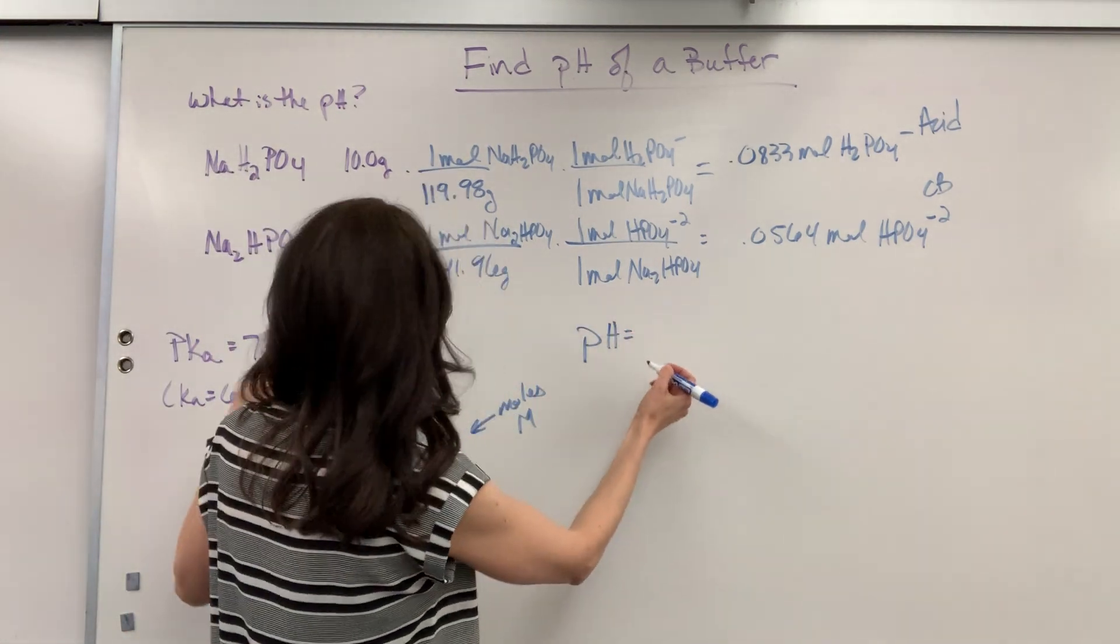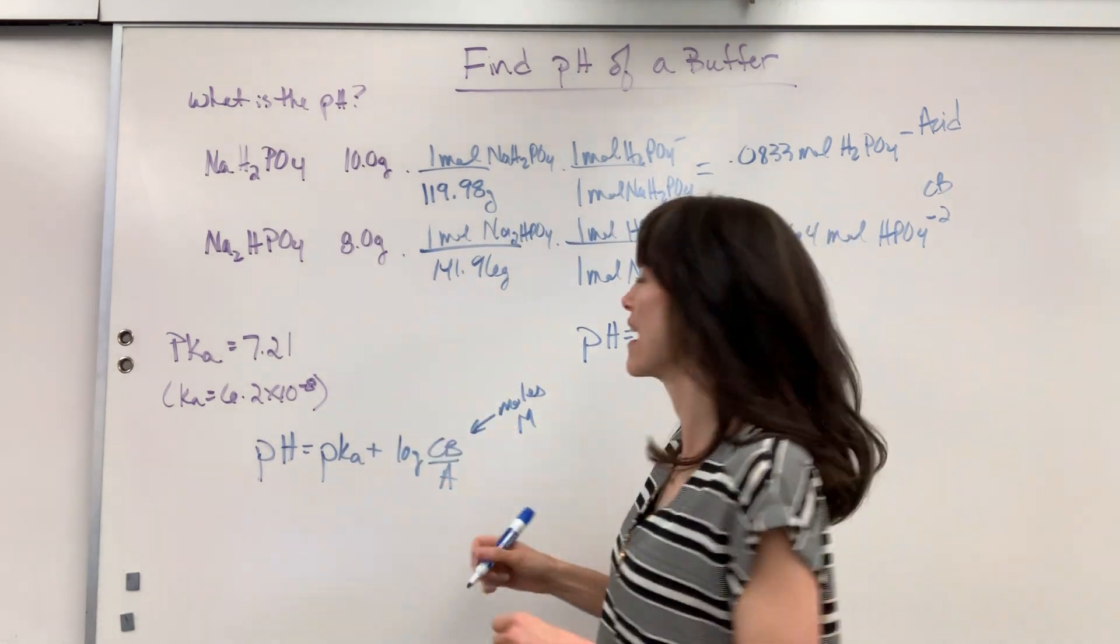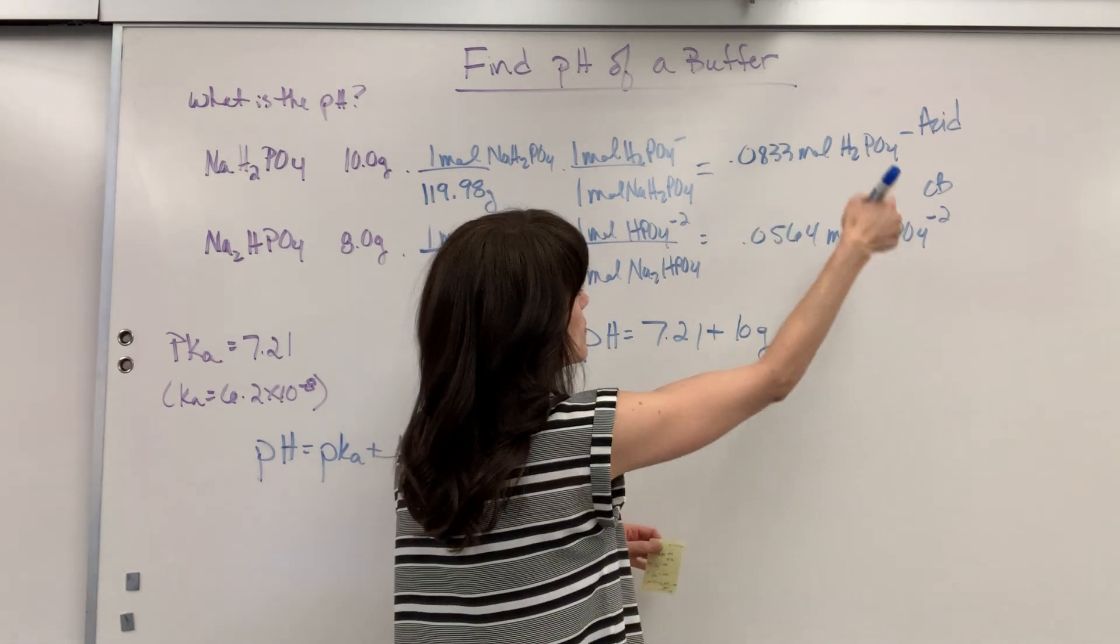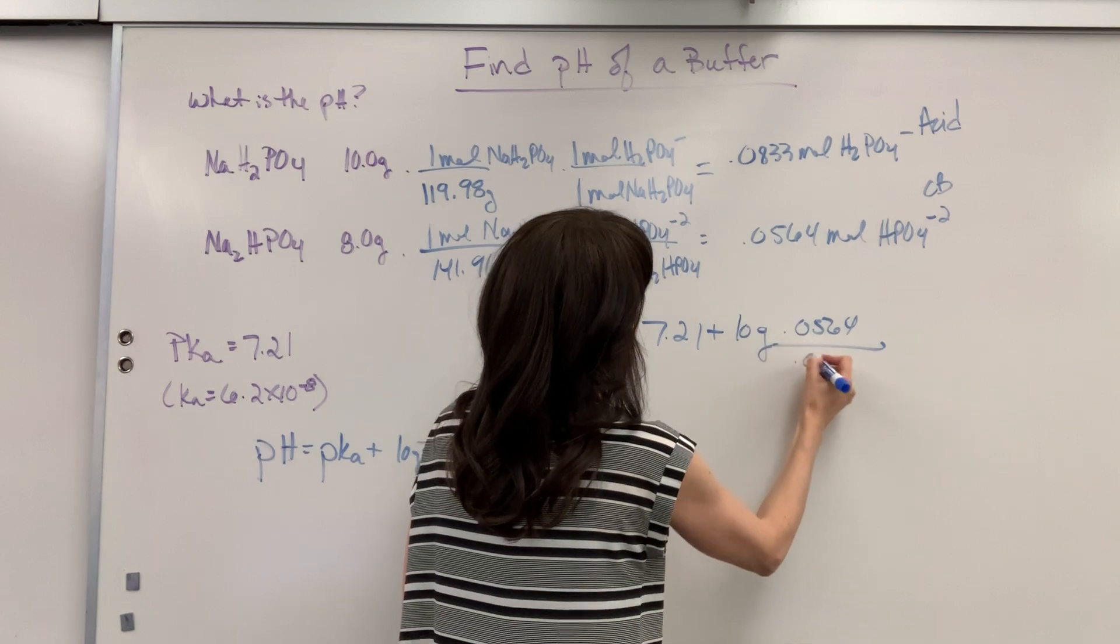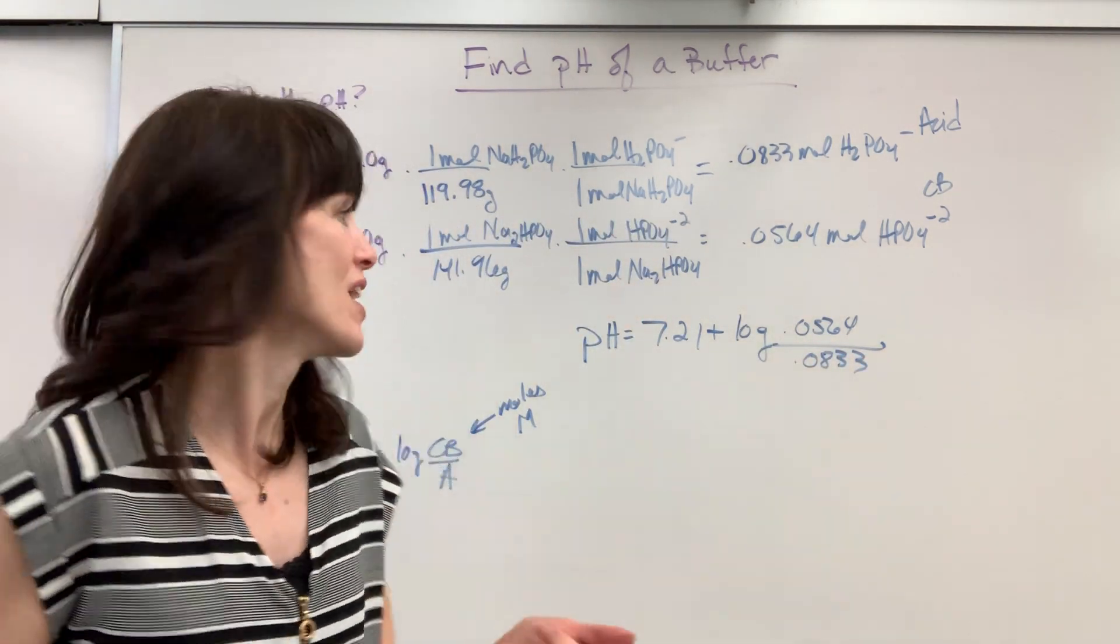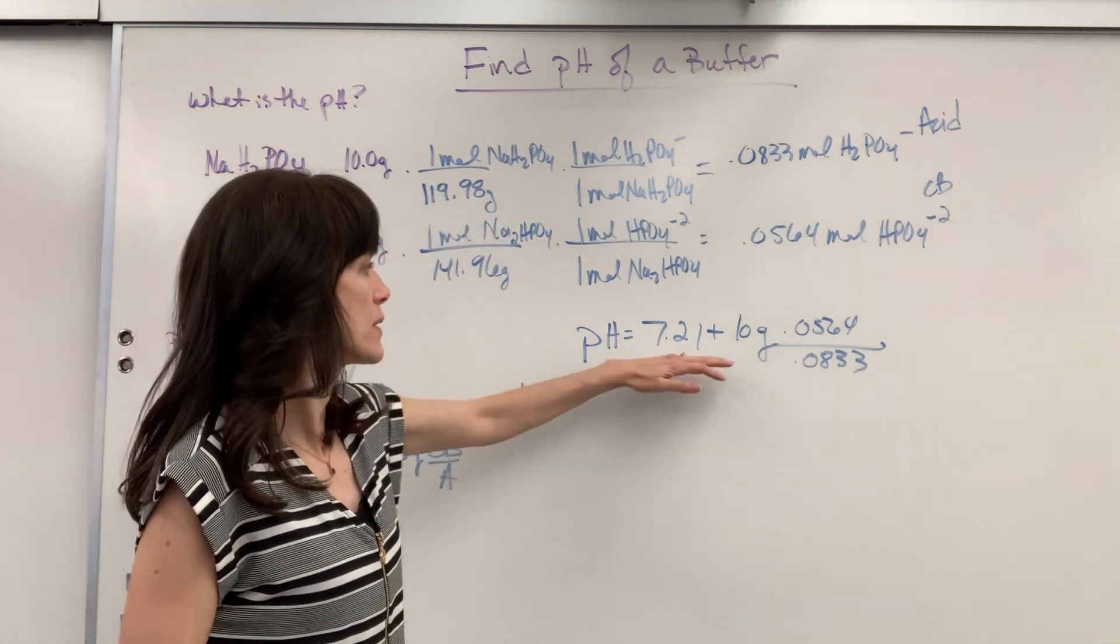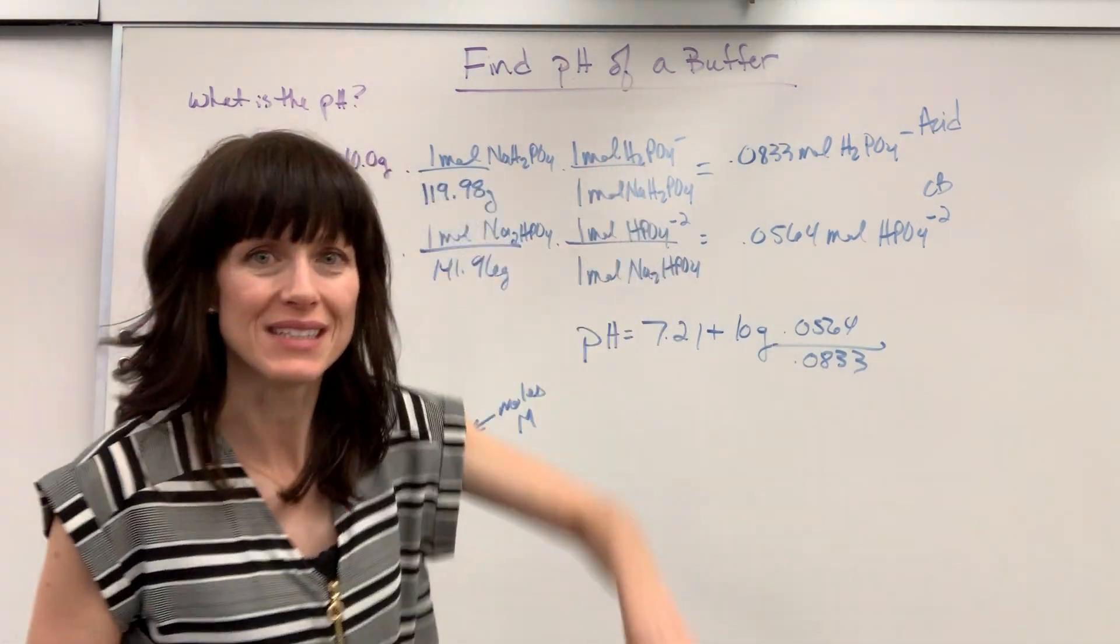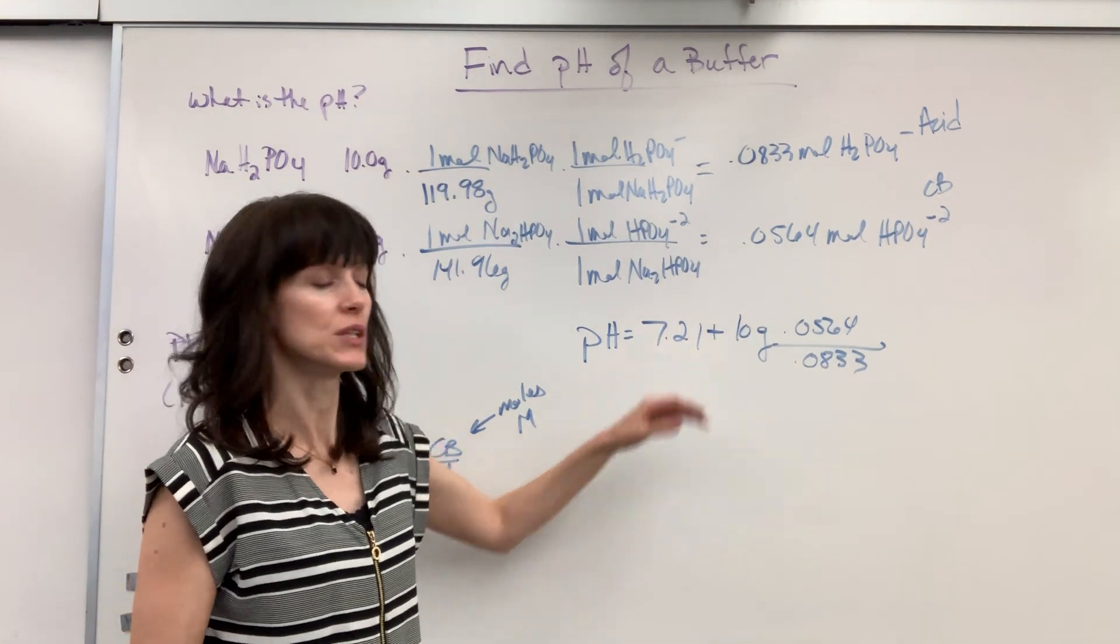pH equals the pKa was the 7.21. I just did negative log of the Ka plus log of my conjugate base right here 0.0564 divided by 0.0833. Now before we do the calculation I want to ask you. Notice I have more acid than base. So predict is the pH going to be greater than or less than 7.21? Well if I have more acid that's going to decrease the pH. So I predict it's less than 7.21.